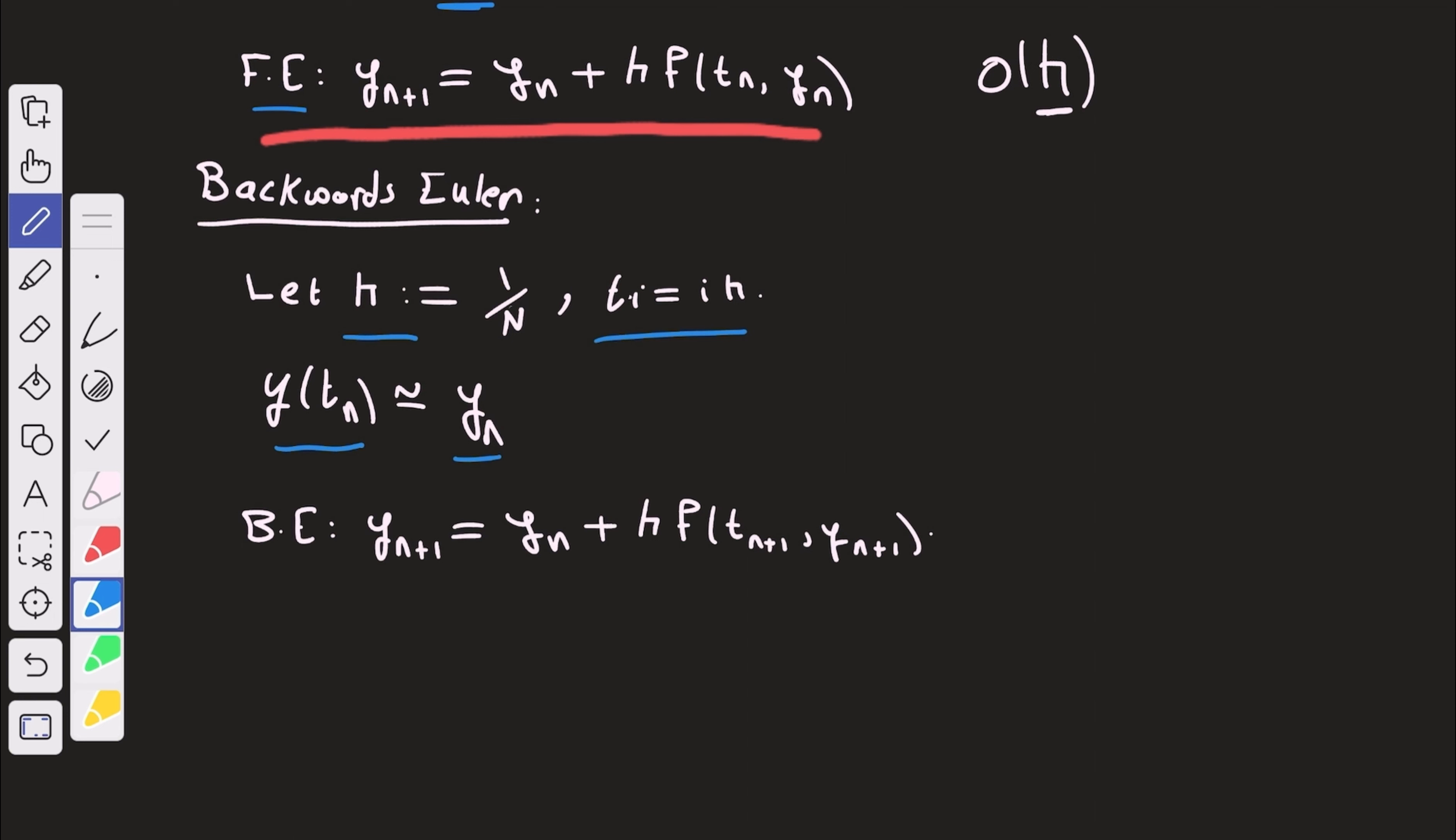So to do that, we're going to introduce the method y at tn plus 1 is equal to y at tn plus h times f of tn plus 1, yn plus 1. You should compare the difference between the two methods, which is the indices we're taking in the arguments of f.